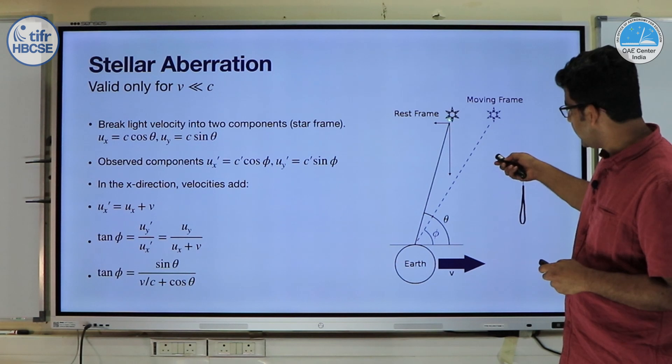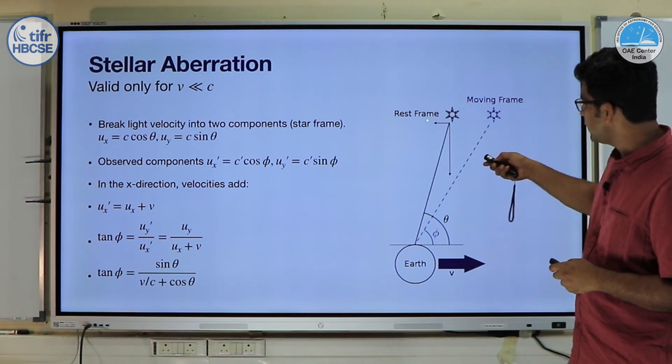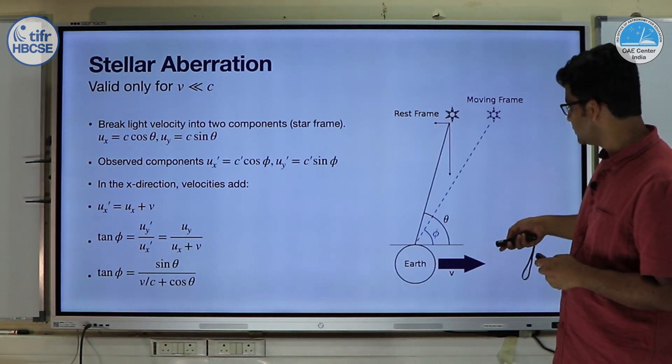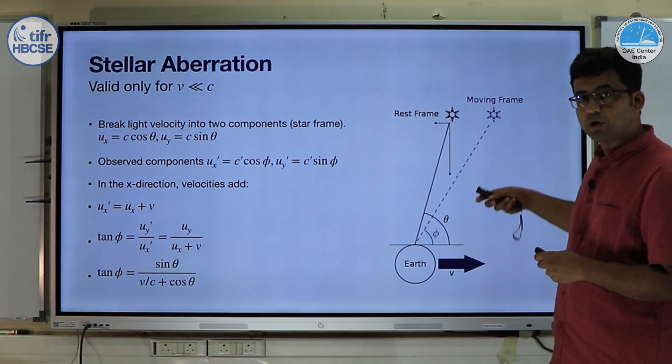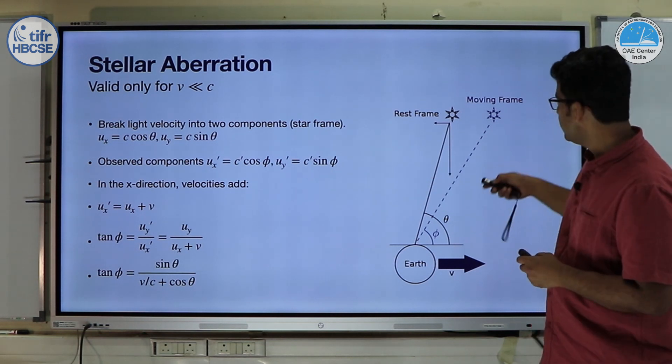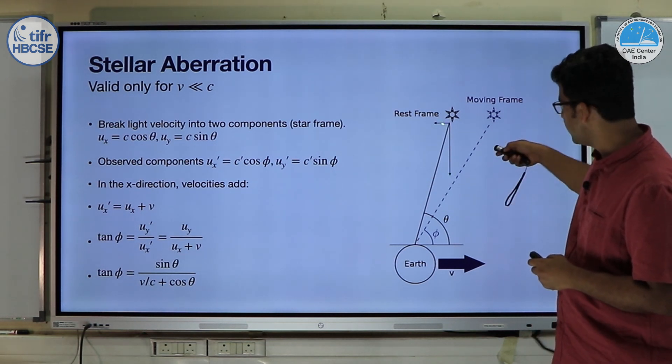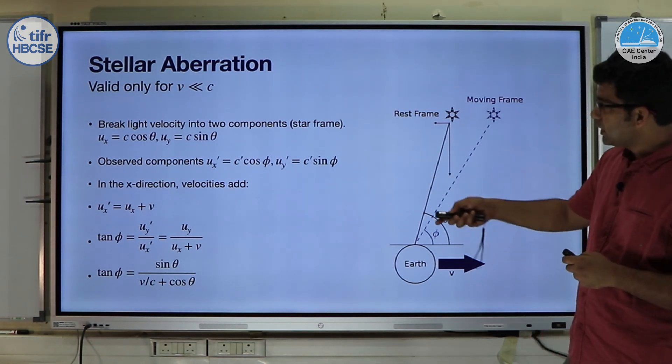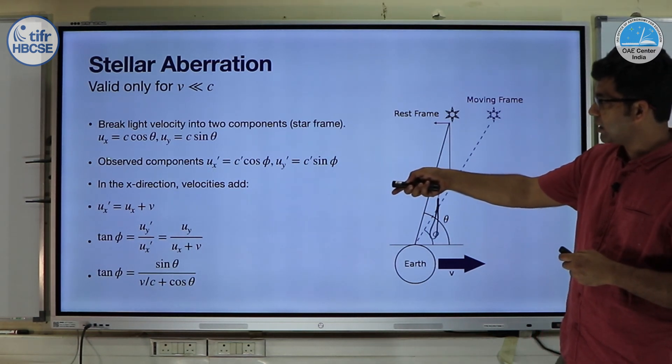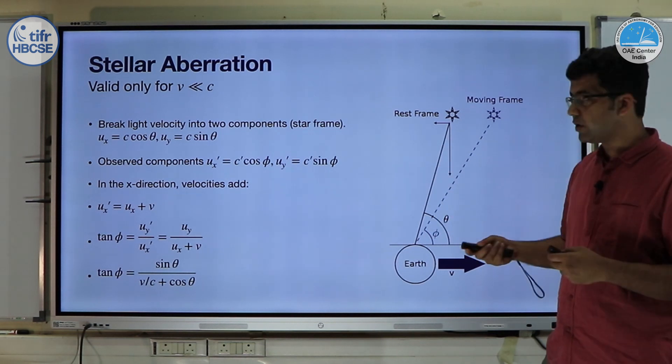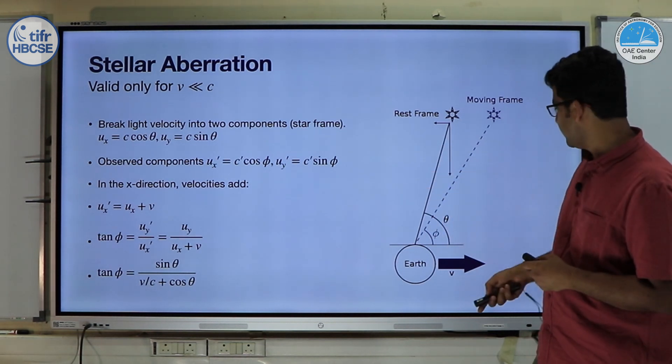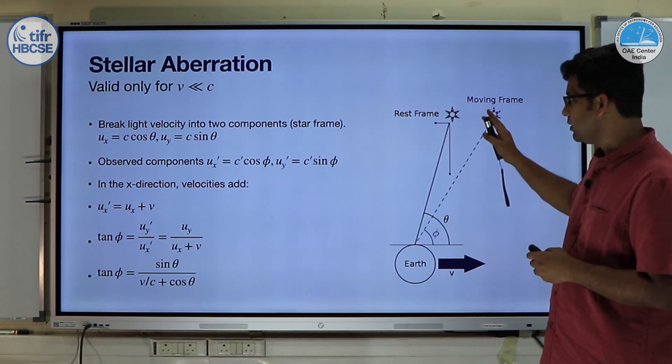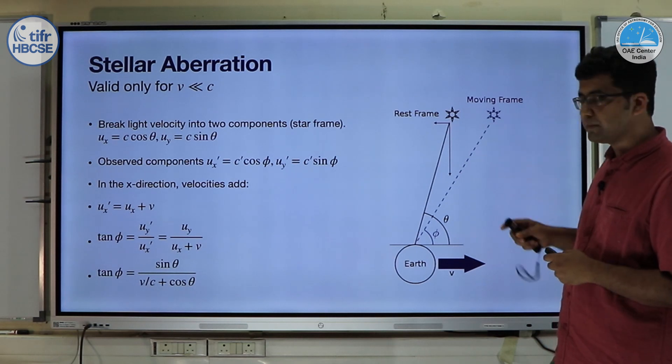Let us consider the light coming from the star and we can break it into two components. The one component along velocity of motion which is v, we are going to denote that as ux which is c cos θ, and we have the perpendicular component which is uy which is c sin θ. Now in the observed frame there are the observed components of the velocity which is ux' and uy' which are dependent on this angle φ as c' cos φ and uy' is equal to c' sin φ.